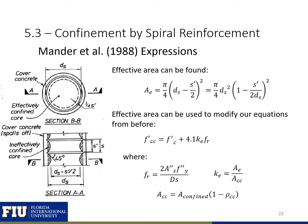We use these figures to define an effective area — the area of the effectively confined core taking into account the arching effect that happens between our spiral reinforcement. We then use this effective area to define a K-E factor that relates our total confined area to our effective area, and then use this factor with the expression we derived before to relate our confined concrete strength to our unconfined concrete strength.